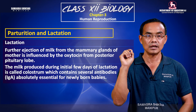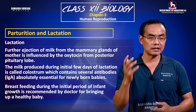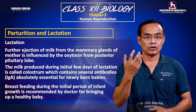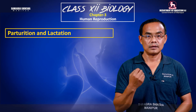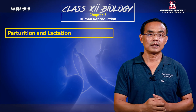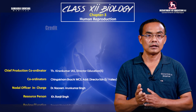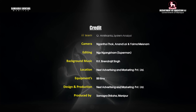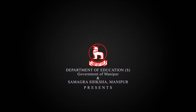Colostrum contains anti-immunoglobulin antibodies that provide immunity to the newborn. These antibodies help develop the immune system of the baby. Thank you very much.